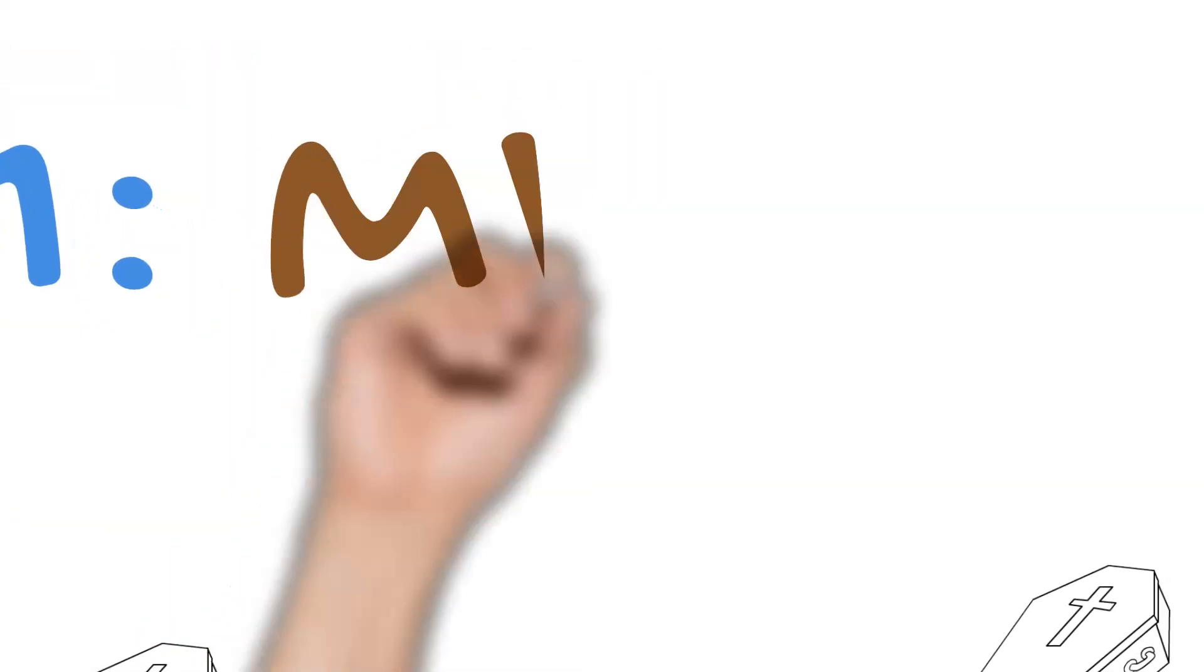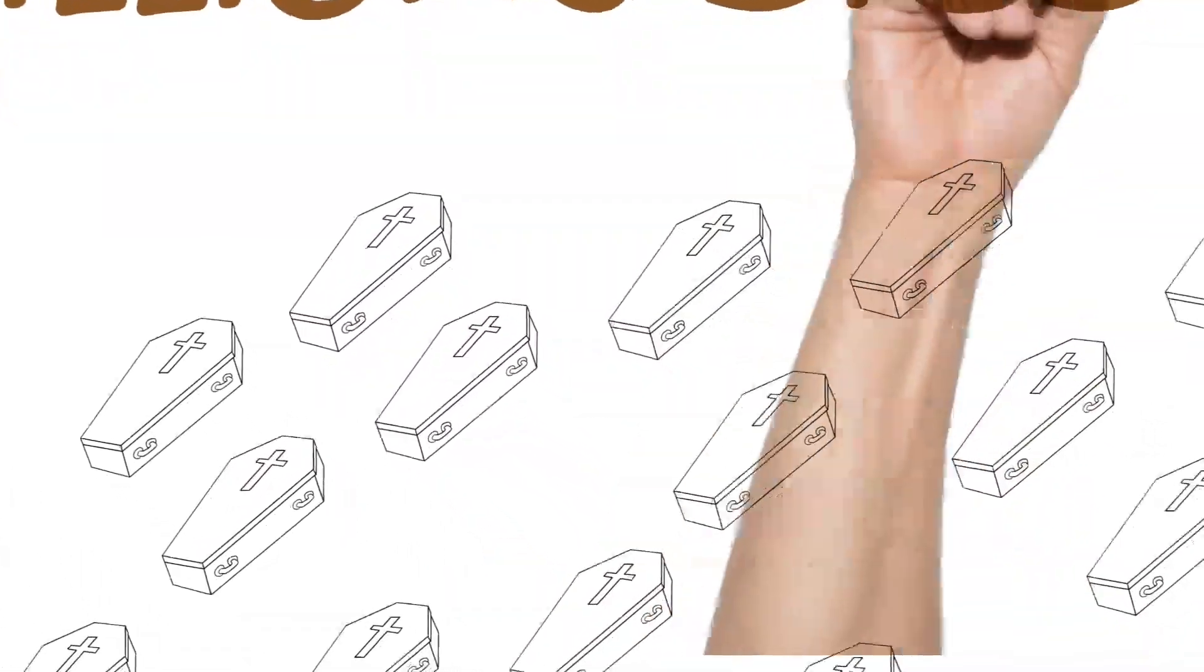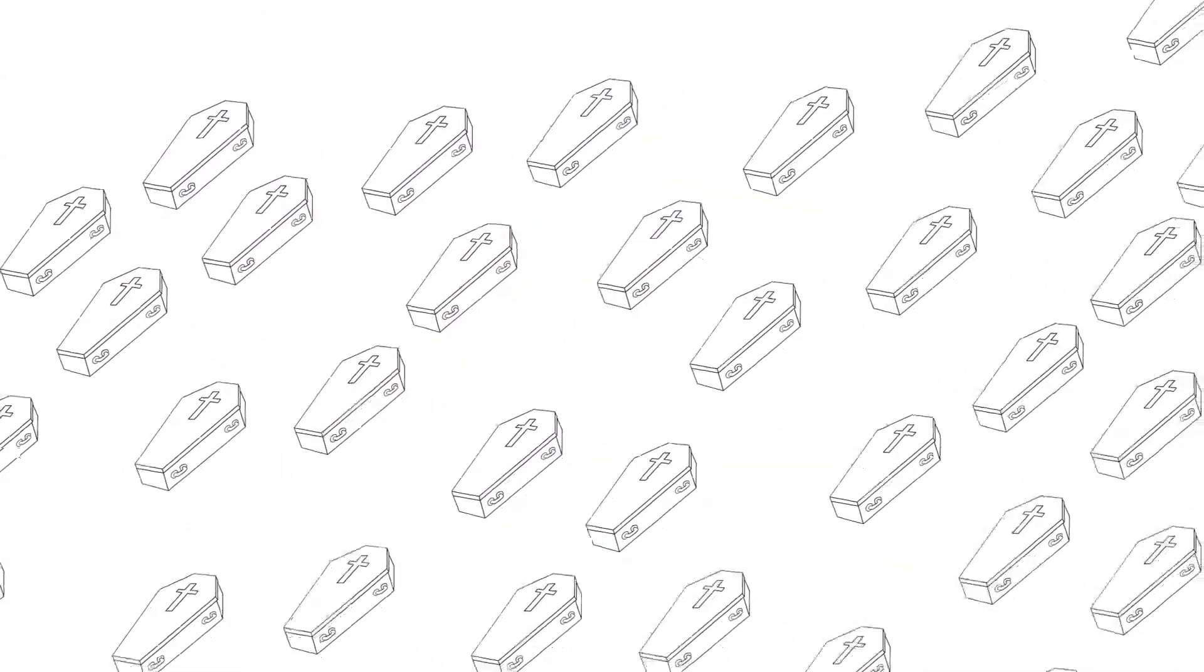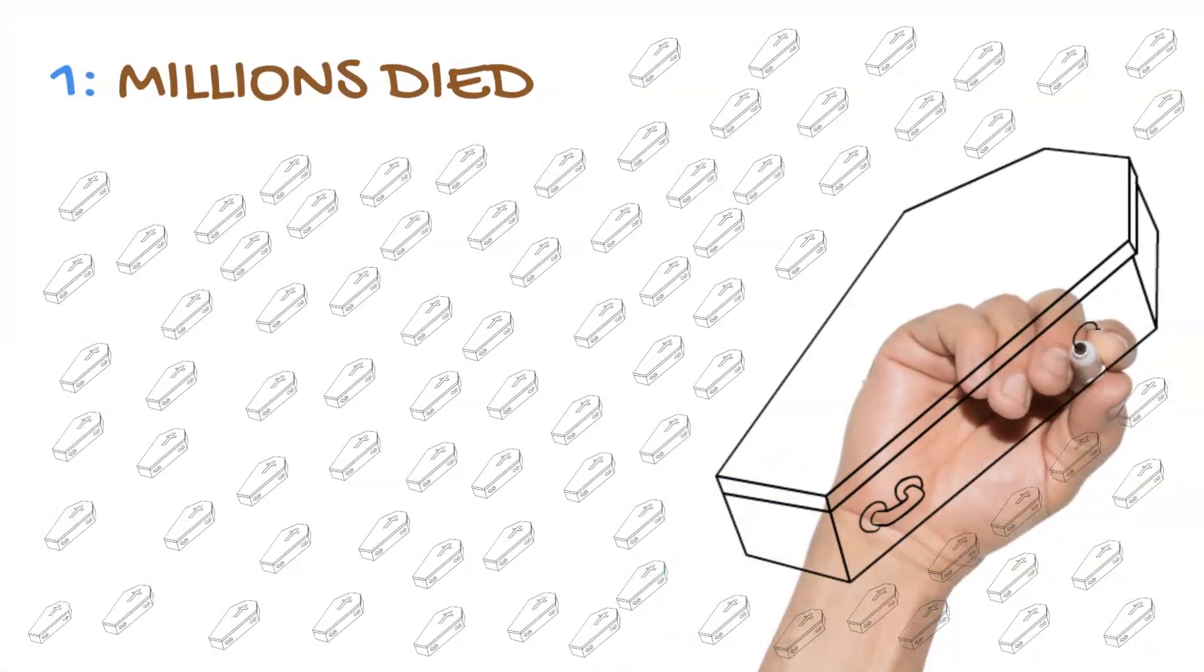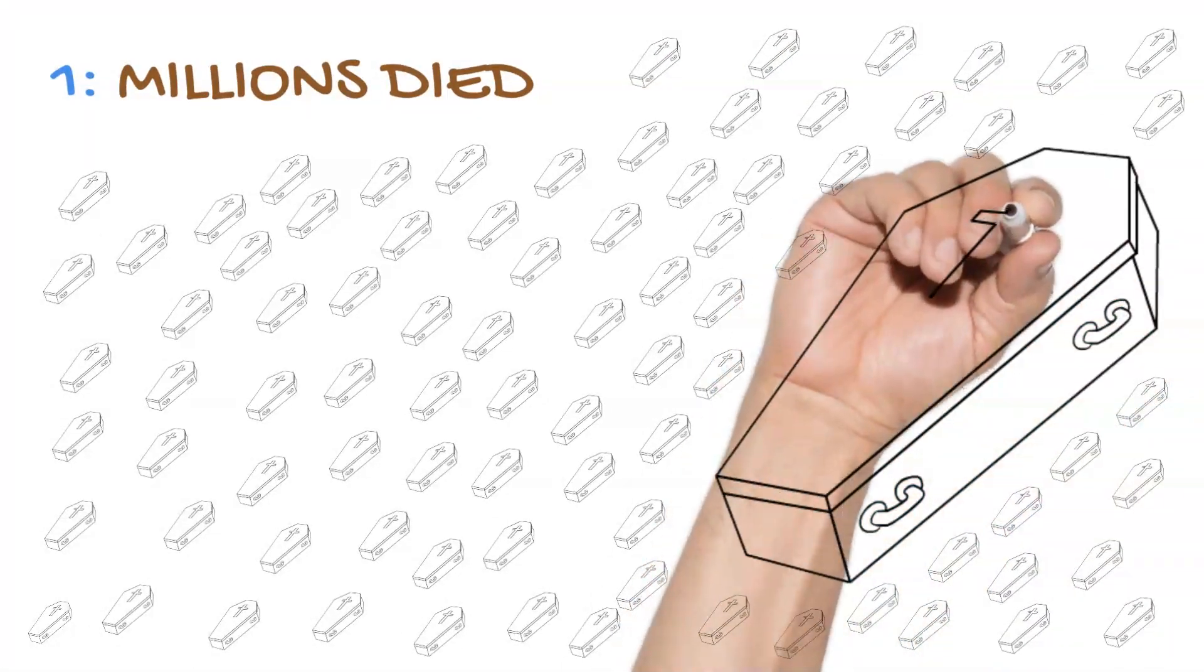Historians believe that the Black Death killed an estimated 45 to 60% of Europeans, and as much as a third of people living in the Middle East. There were so many deaths that mass graves were the only way to effectively deal with all the bodies.